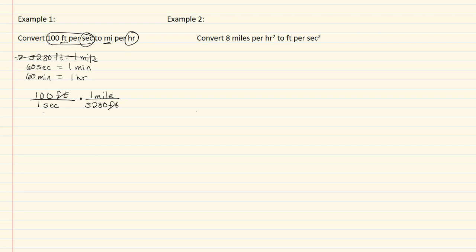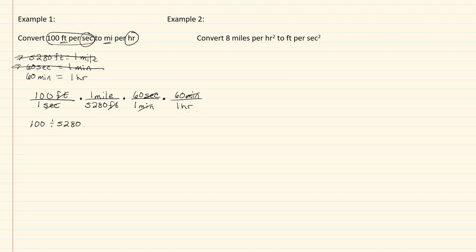Now I have seconds in the denominator, and I want to convert that to hours. Using the conversion with seconds, sixty seconds goes on top and the minute goes in the denominator — seconds cancels out. Now I have minutes and need to go to hours, so minutes goes in the numerator of the next conversion factor, with sixty minutes in the numerator and one hour going into the denominator. When I plug this into my calculator, I have one hundred divided by 5,280, times sixty, times sixty.